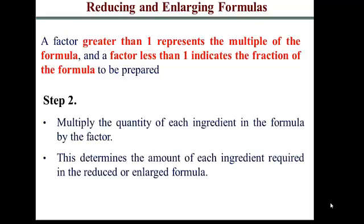In step two, you simply multiply the quantity of each ingredient in the formula by that factor. At the end of the day, you end up with the exact amounts you need for each ingredient, depending on whether you're reducing or enlarging the formula.